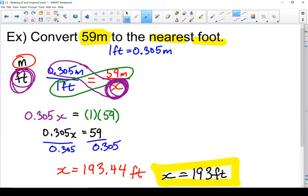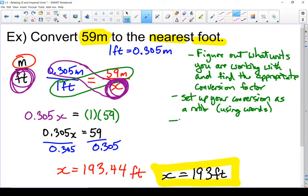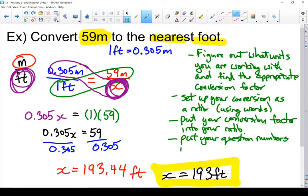Let's go through the steps we went through on this. We started by identifying what units we're working with and found the appropriate conversion factor. Next we set up our conversion in words. After that we put our conversion factor in. Next we put our question numbers in and put an x for the piece we don't know. And last we cross multiply. I'm going to put a quick reminder don't forget your units.